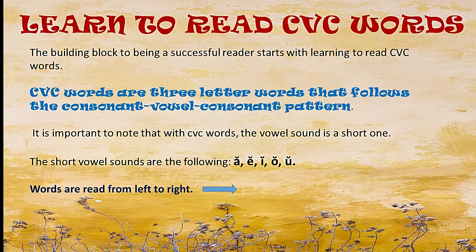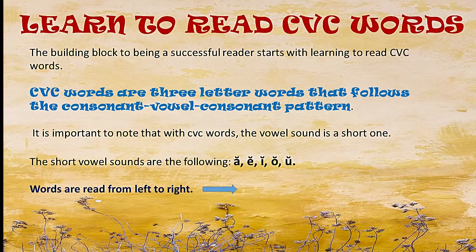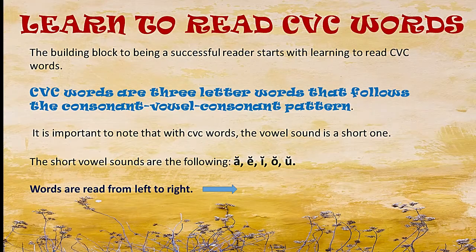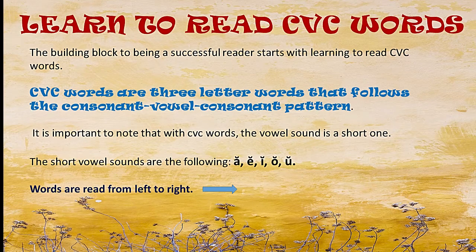The short vowel sounds are: a, e, i, o, and u. As we introduce new CVC words to a child, it's important to introduce them to the corresponding pictures so that it builds an instant connection in their minds and helps seal the learning process.